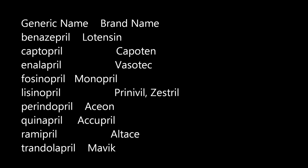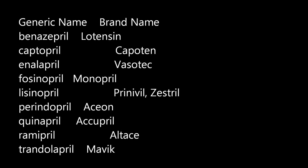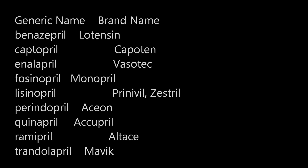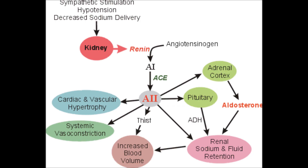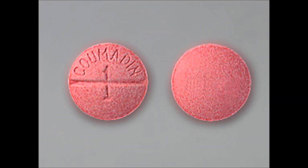Brand names include Lotensin, Capoten, Vasotec, Monopril, Accupril, Altace. Caution: blood pressure less than 90 to 100. Side effects are hypotension and cough. For example, if a patient is given captopril and develops a cough, that is the side effect of ACE inhibitors. Anticoagulants — blood thinners — are used in atrial fibrillation. Warfarin (Coumadin) requires major patient education before discharge; the main effect is bleeding from anywhere.